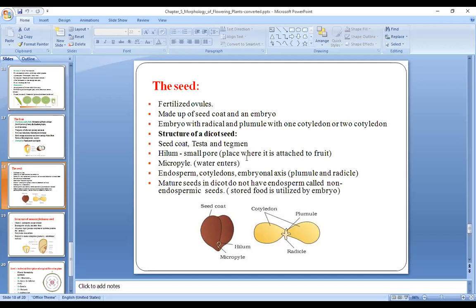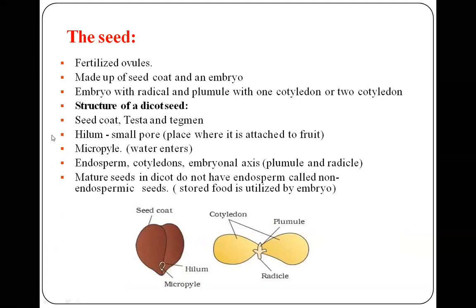The micropyle is the pore through which water enters the seed, since seeds require water for development. Inside the seed, three components are present: endosperm, cotyledons, and the embryonal axis. The embryonal axis contains the plumule and the radicle.